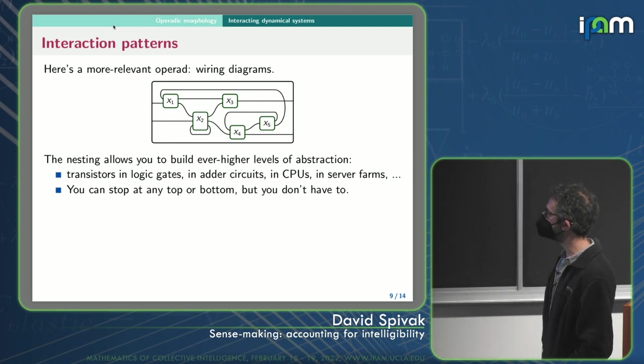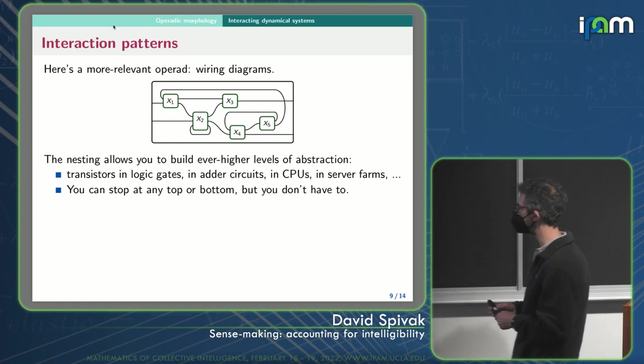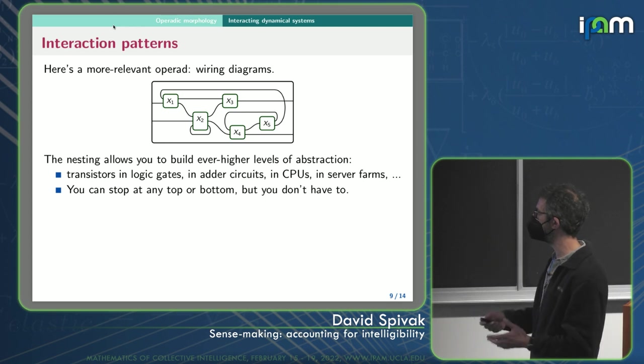And the arrangements are wiring diagrams, like who's talking to who. And so this lets you, when you nest this thing, you can build higher levels of abstraction. So for example, each of these XIs could be a transistor, and you put them together, and you get a logic gate. And you put logic gates together, and you get an adder circuit. You put adder circuits together, you get a CPU. And you put those together, you get server farms. And you can keep going as far up or down as you want. You can stop at any point. You don't have to.